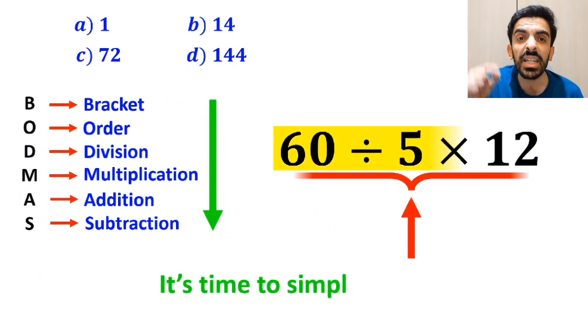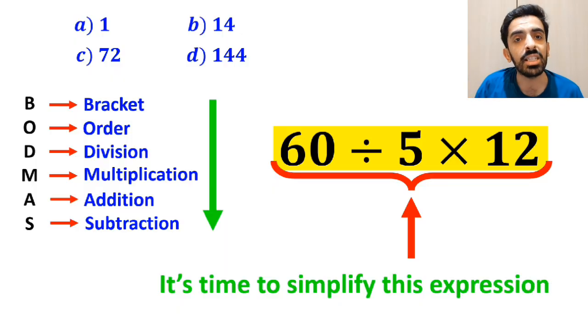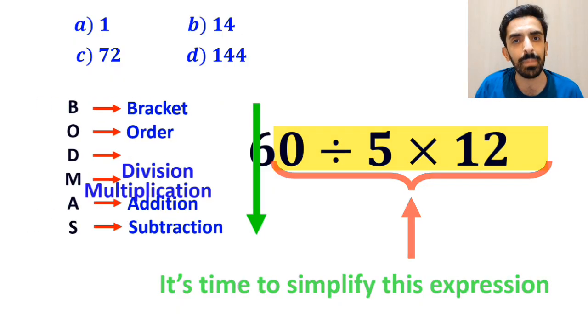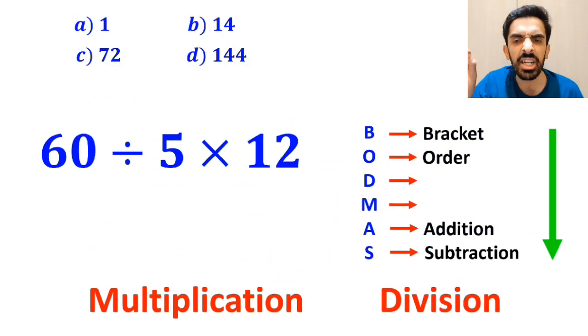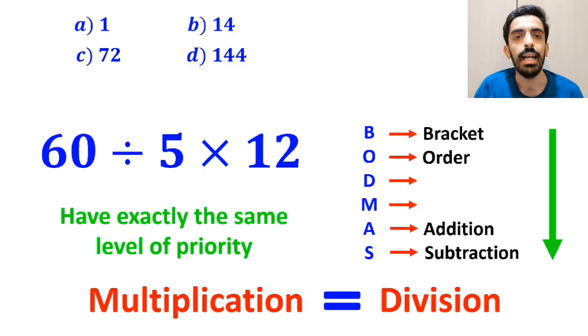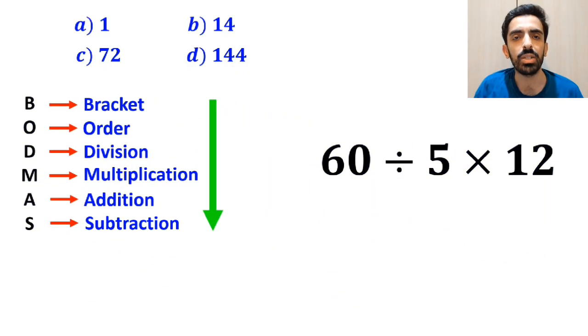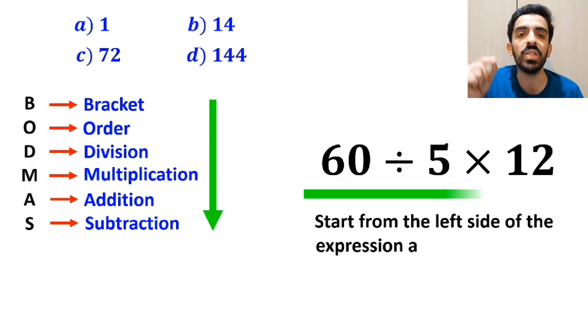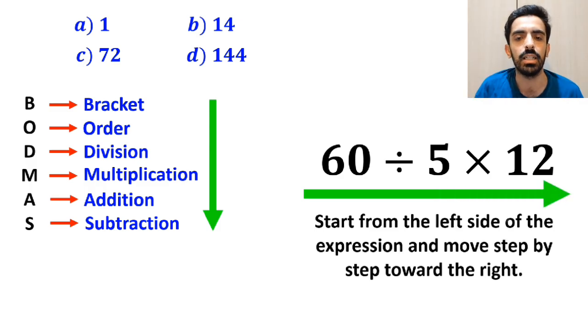Now, it's time to simplify this expression. It's very important to note that in the BODMAS rule, multiplication and division have exactly the same level of priority. In this case, all we need to do is to start from the left side of the expression and move step by step toward the right.